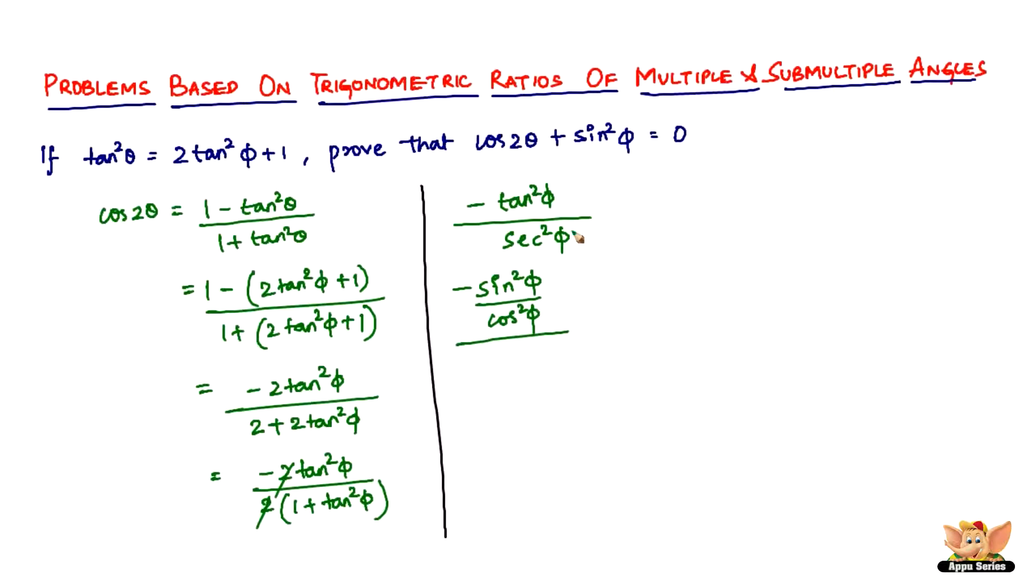And divided by sec²φ is nothing but 1 by cos²φ, which can be written as sin²φ divided by cos²φ, of course is a negative here, times the reciprocal of the denominator, cos²φ by 1.